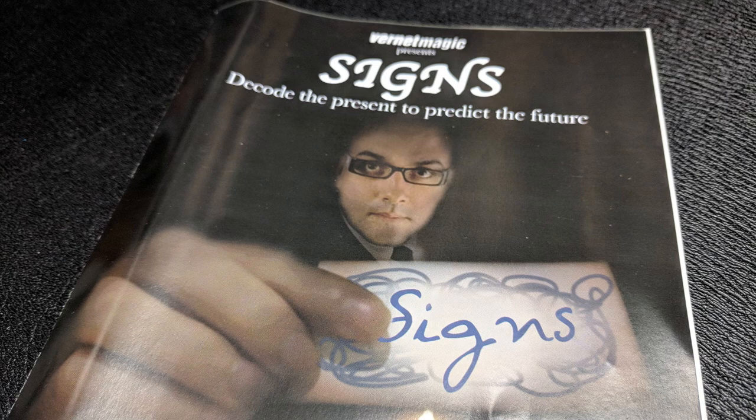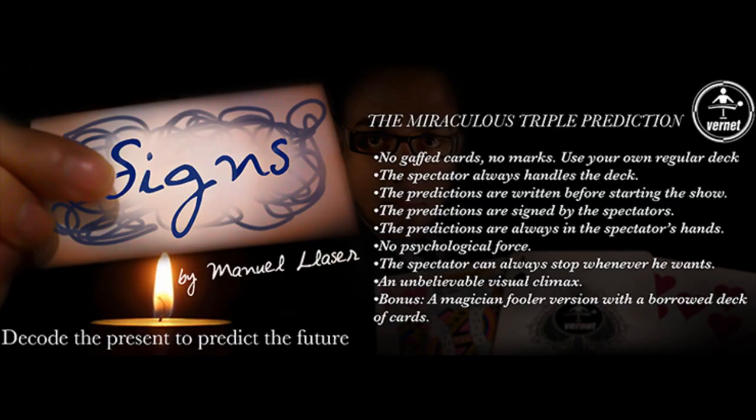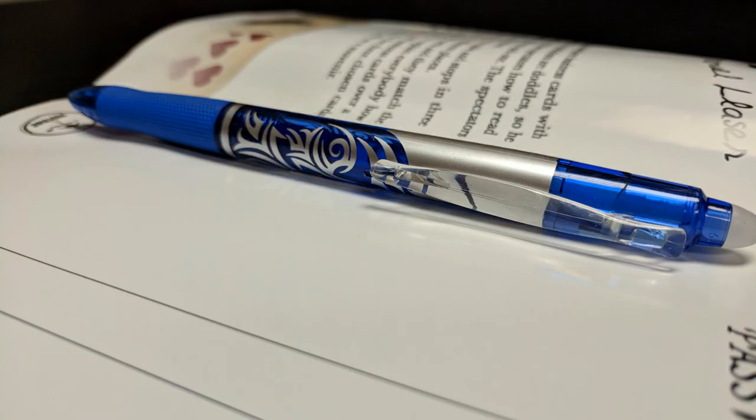The link will take you out to the web. You'll get a download that's roughly 52 minutes long. You'll also have access to a four-page PDF that you can read in either English or French. And you will also get a friction pen.